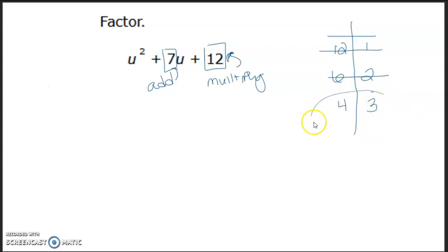So once you've found that magic pair, that's your answer. Okay, so what we do is we take these little numbers and we put them like this. X, oh I'm sorry, it's a U, so we have to use the variable that they used. So we have U plus 4, because that's a positive 4, and then U plus 3, because that's a positive 3.